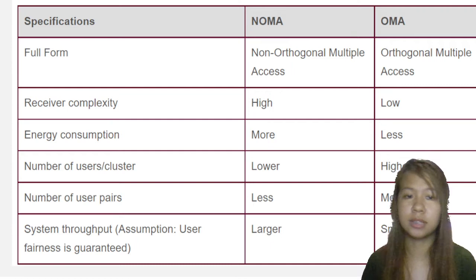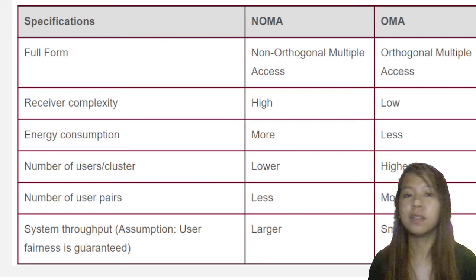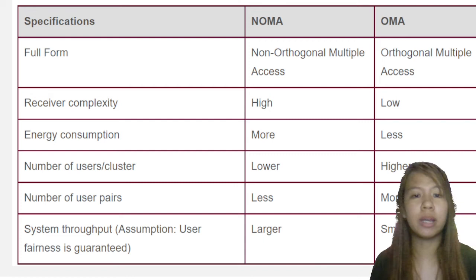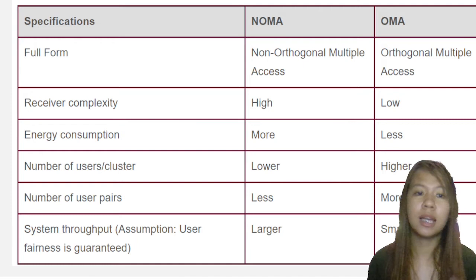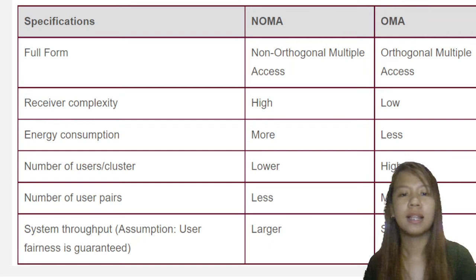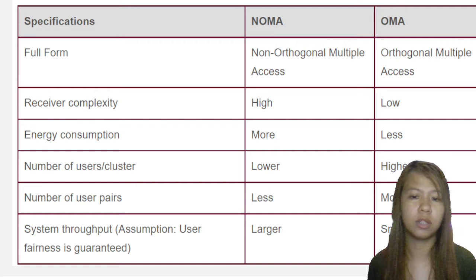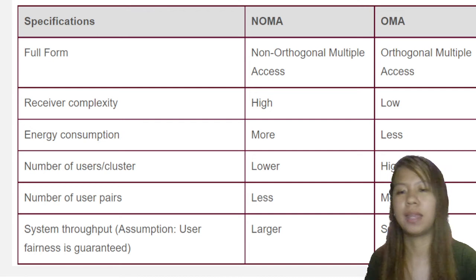Non-Orthogonal Multiple Access versus Orthogonal Multiple Access: In receiver complexity, NOMA is high while OMA is low. In energy consumption, NOMA has more energy consumption than OMA. For number of users per cluster, NOMA is lower and OMA is higher — OMA is not limited while NOMA is limited. In number of user pairs, NOMA is less and OMA is more. And for system throughput, NOMA is larger, while OMA is more complex than NOMA because NOMA has a lower and limited number of users.